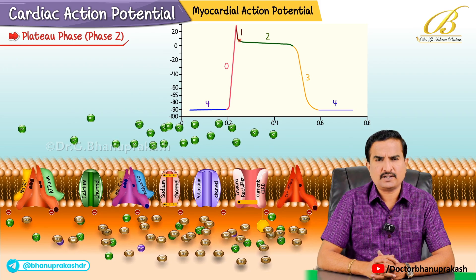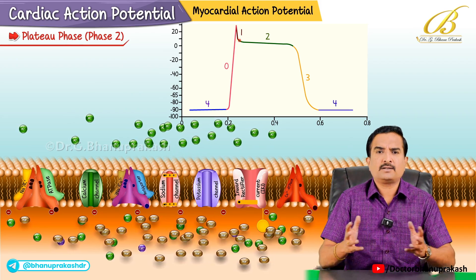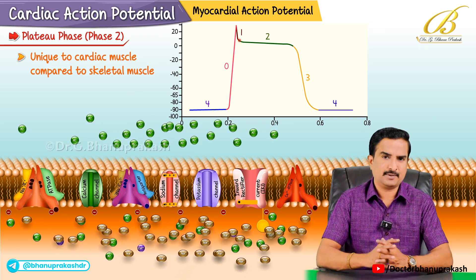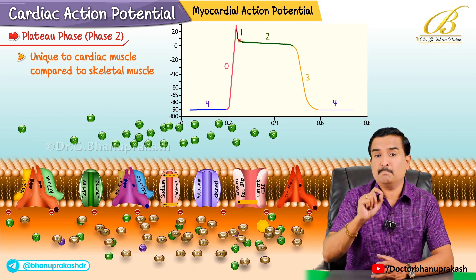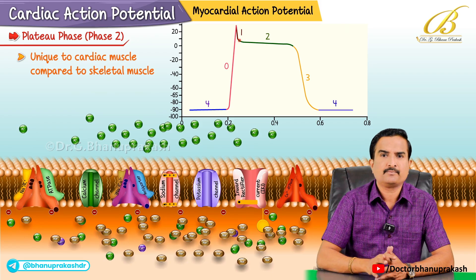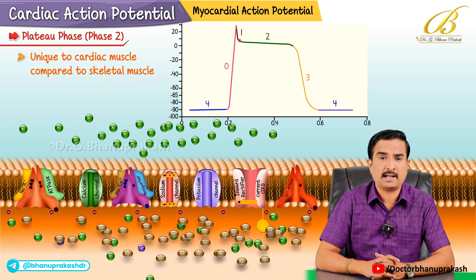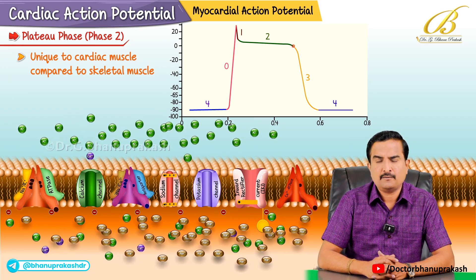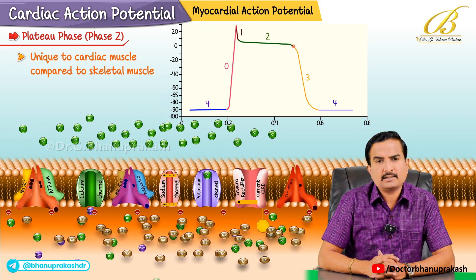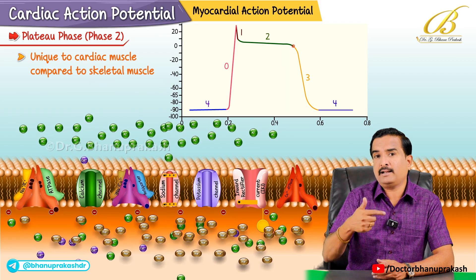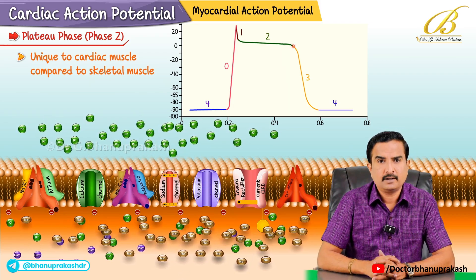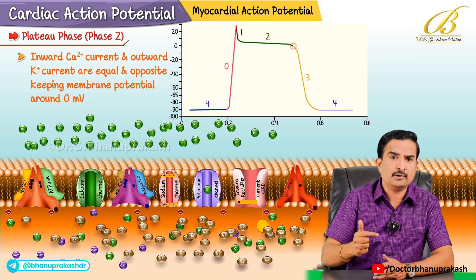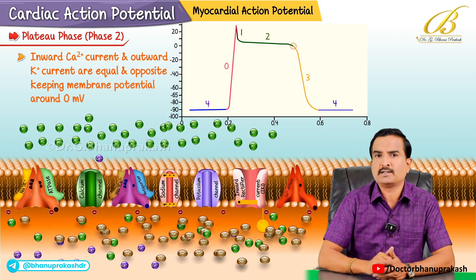Now coming to phase 2, a very important phase called the plateau phase. We enter a plateau phase which is very unique to cardiac musculature compared with skeletal muscle. Two major currents balance each other - you can see the plateau phase is pretty much straight with no net depolarization or repolarization, which is why we call it a plateau. Calcium ions flow in through L-type calcium channels, which open slightly later than sodium channels, and potassium ions flow out through delayed rectifier potassium channels. The inward calcium currents and outward potassium currents are nearly equal and opposite, keeping the membrane potential around zero millivolts.